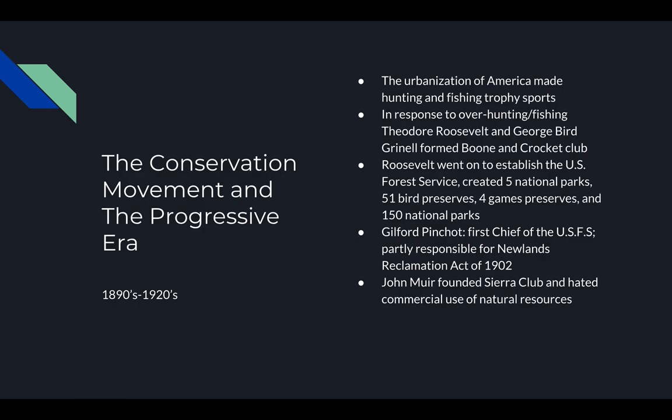Theodore Roosevelt also founded the U.S. Forest Service and nominated the first chief, Gilbert Pinchot. Together, they passed the Newlands Reclamation Act of 1902, which promoted federal dams to be built for use by local farmers and placed 230 million acres under federal protection. Roosevelt also created five national parks, 51 bird preserves, four game preserves, and 150 national forests, giving him a unique legacy as he set aside more federal land for national parks and preserves than all of his predecessors combined.